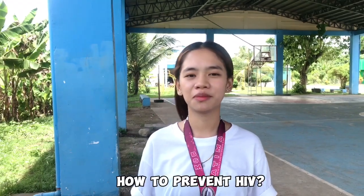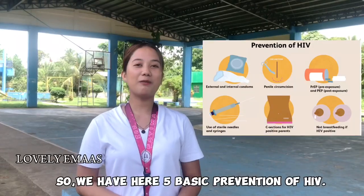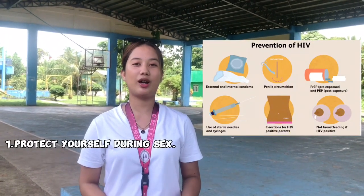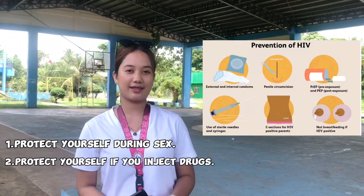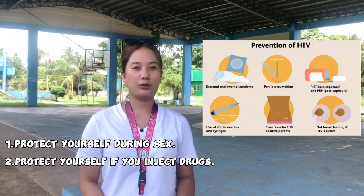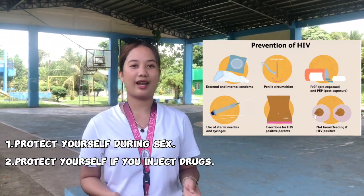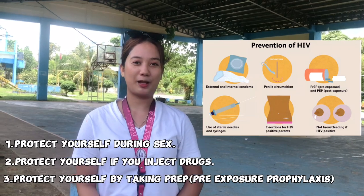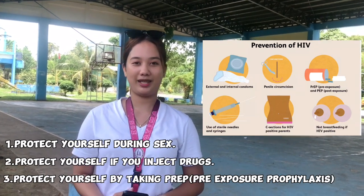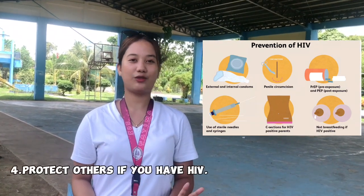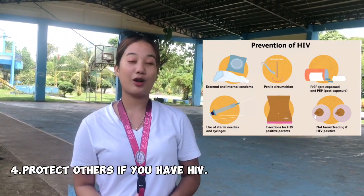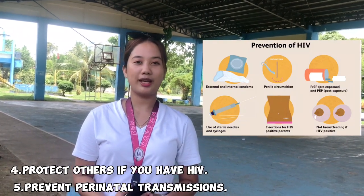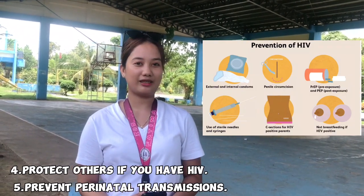How to prevent HIV? We have here 5 basic preventions of HIV. Number 1: Protect yourself during sex. Number 2: Protect yourself if you inject drugs. Number 3: Protect yourself by taking PrEP. Number 4: Protect others if you have HIV. Number 5: Prevent prenatal transmissions.